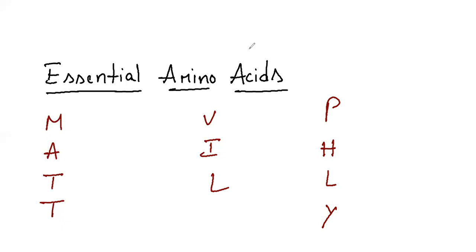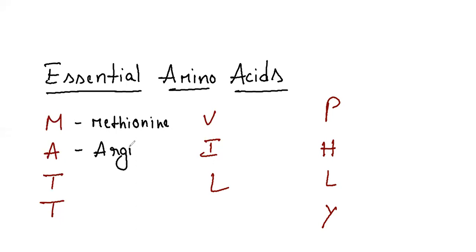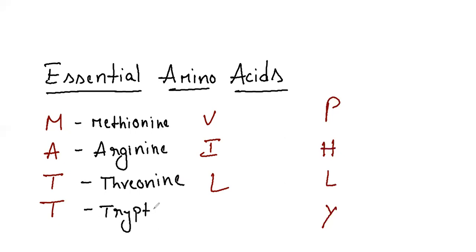So for M it is methionine. And next, for A it is arginine. Methionine, arginine. And next we have two T's here — threonine and tryptophan. Threonine and tryptophan. Next, V for valine.